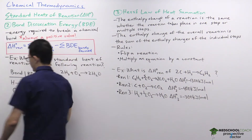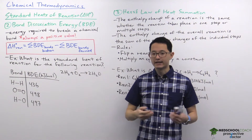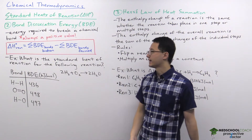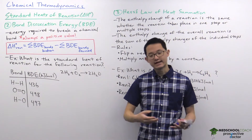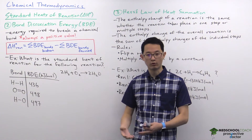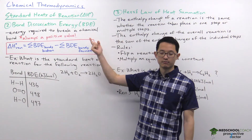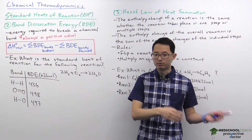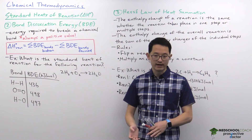Since the bond dissociation energy is always a positive value, this might seem a little tricky because the enthalpy change of a reaction can be positive or negative. What's convenient is that the amount of energy required to break a bond is the same amount of energy released when that bond is formed. We can use bond dissociation energy to calculate the energy required to break and form bonds in a chemical reaction to find the heat of reaction.